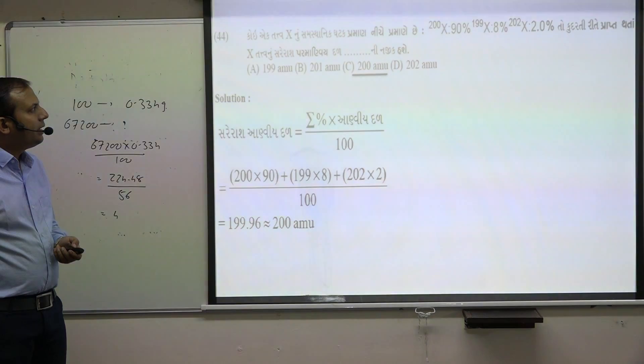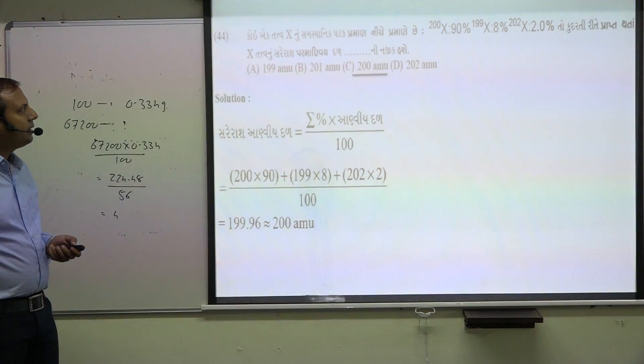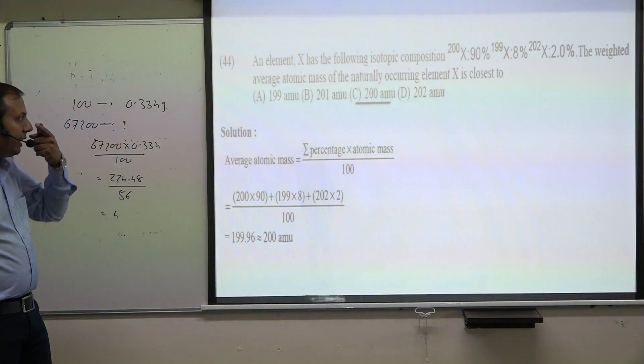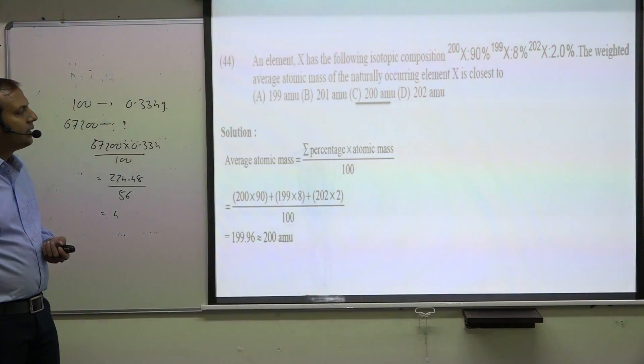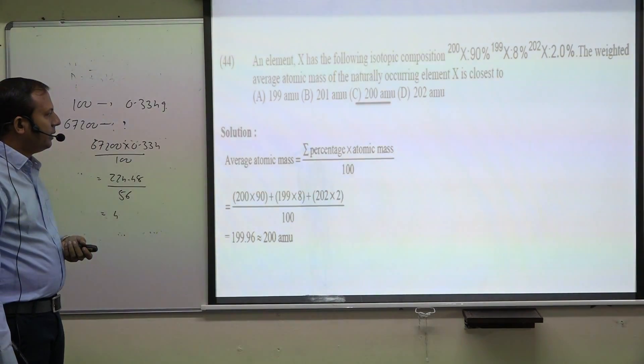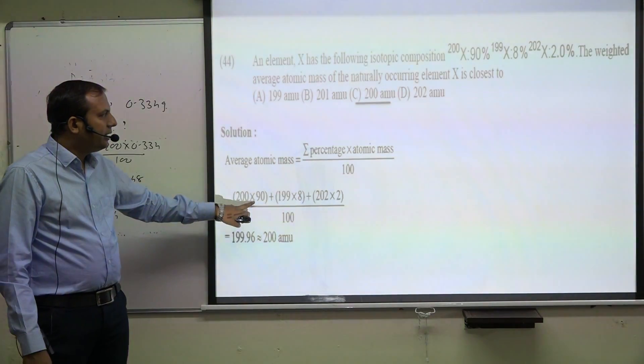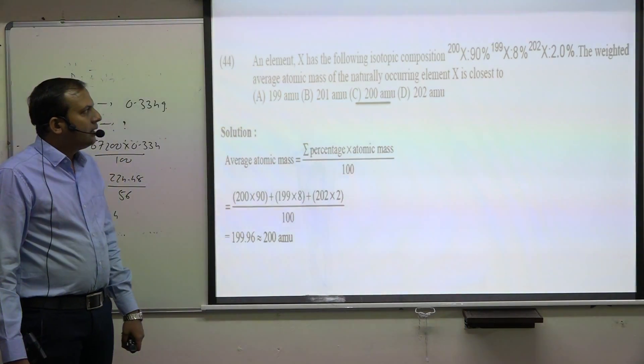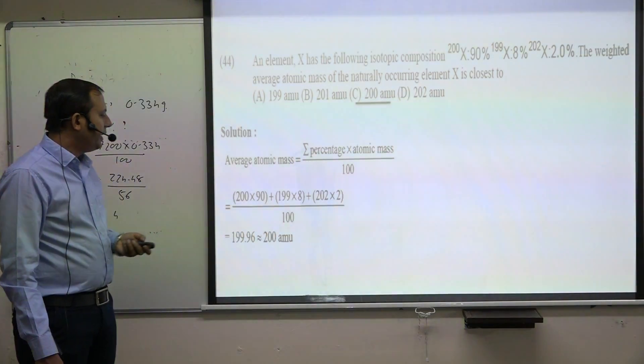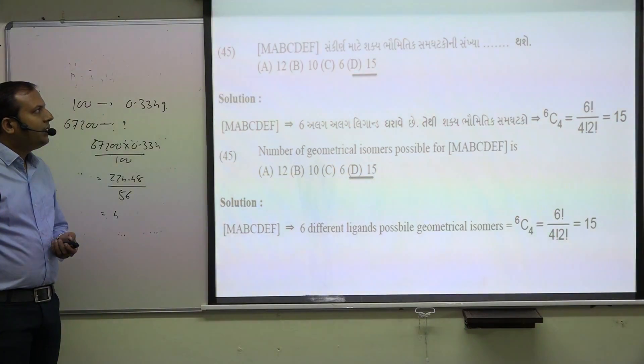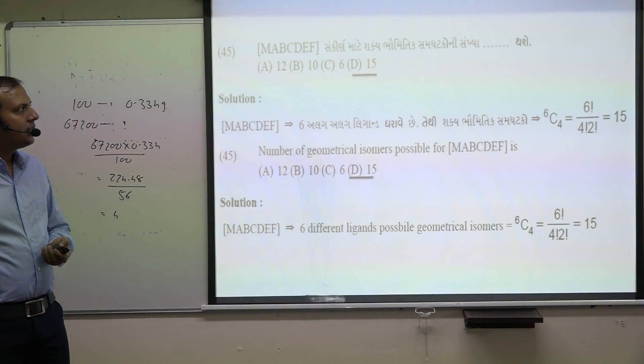An element X has the following isotopic composition: 200X is 90 percentage, 199X is 8 percentage, and 202X is 2 percentage. The weight average atomic mass of the naturally occurring element X: average atomic mass equals sum of percentage times atomic mass divided by 100. 200 times 90 plus 199 times 8 plus 202 times 2, divided by 100, equals 200.